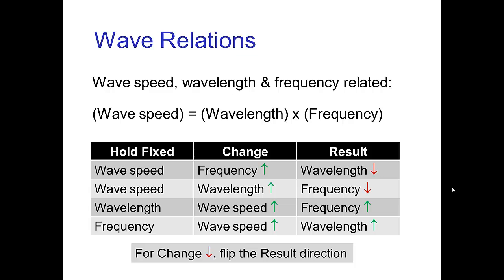Here are some examples in this table. If we hold the wave speed fixed and we increase the frequency, then the wavelength of the resulting wave goes down, so the waves get shorter. If we hold the wave speed fixed and we increase the wavelength, then the frequency goes down. Let's look at some specific physical consequences of these relations.